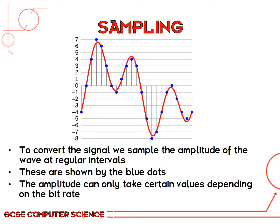To get from analog to digital, we need to do what we call sampling — we sample what the actual amplitude is at different regular intervals. You can change how often you do this and that will affect the quality of the sound. On this diagram you can see blue dots appearing on the red line quite regularly through the stream. The amplitude can only take certain values depending on the bit rate.